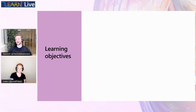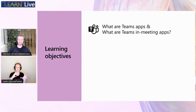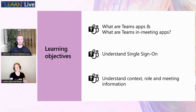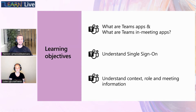Now we have the learning objectives. We will be covering: what are Teams apps, what are Teams in-meeting apps — because there is a difference, not every Teams app is an in-meeting app. Then we want to understand what is single sign-on and why we would care about that. And lastly, context, role, and meeting information in a Teams meeting. We're going from super marketing-y to really deep tech to have the ability to build beautiful, context-aware Teams applications. And there will be code — there will definitely be code.